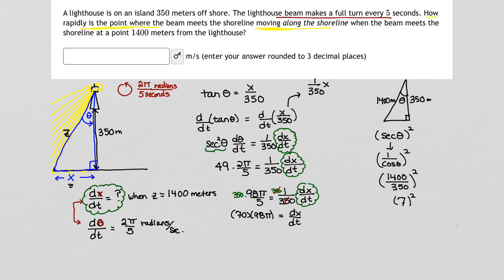So the rate of change of x with respect to time is 6,860π meters per second.